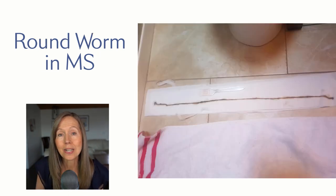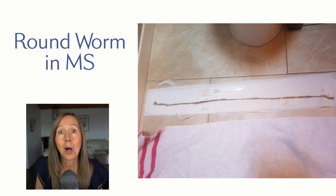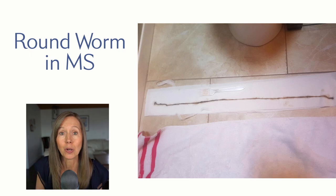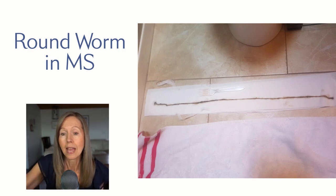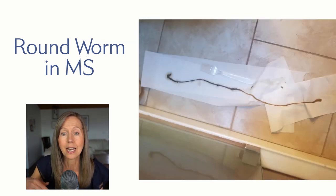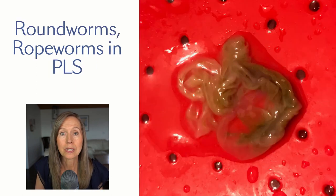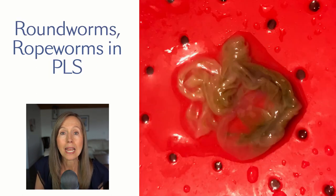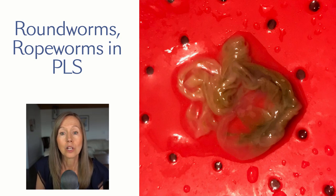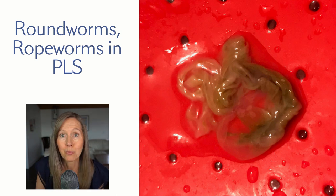This is yet another student that recovered from multiple sclerosis. She passed multiple worms that were this big — this worm is at least over two feet long. And here's another image of another one that she passed. This picture is from one of our students recovering from PLS. In one email she sent me 20 pictures similar to this. This looks possibly like a ropeworm or a large roundworm.